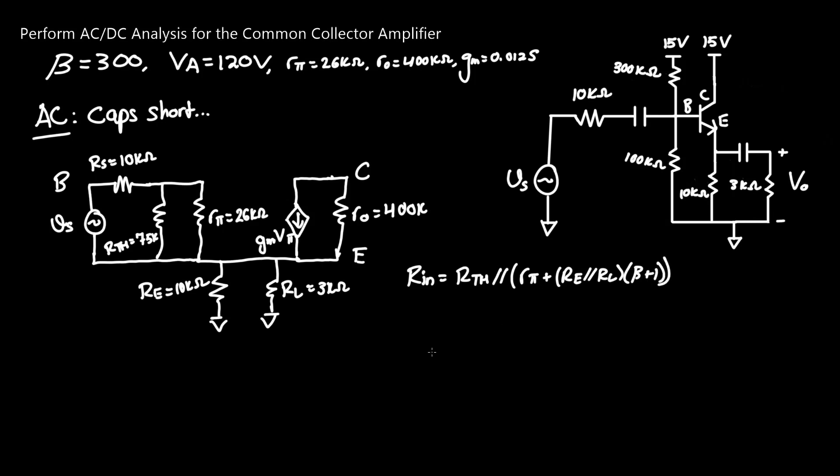The derivation for this formula is a little weird. However, you can piece a couple things together since we know that RE and RL are in parallel, and they're only experiencing the emitter current, so you need to multiply by beta plus 1 to get to the base current. By plugging these numbers in, we get RIN equals 75 kOhms in parallel with 26 kOhms plus 10 kOhms in parallel with 3 kOhms times 301. RIN equals 68 kOhms.